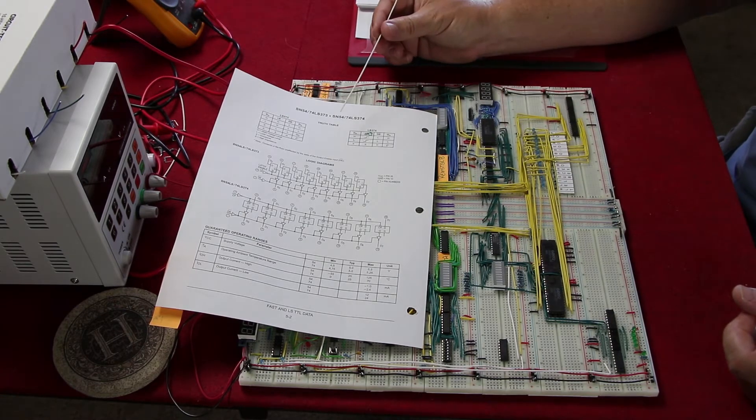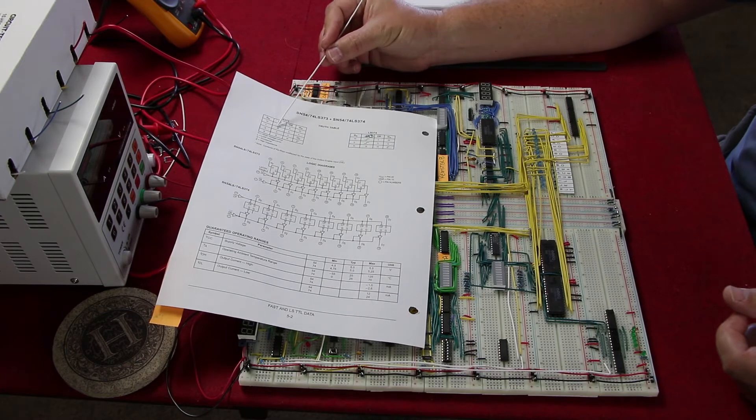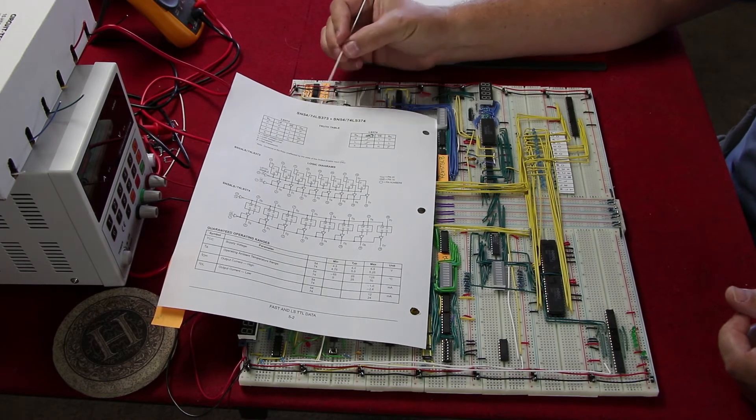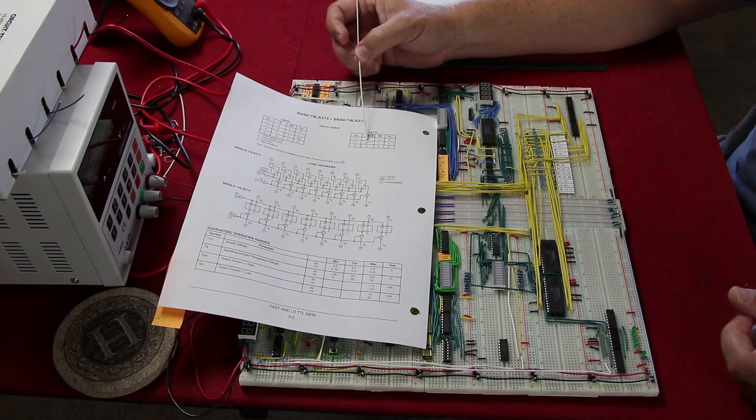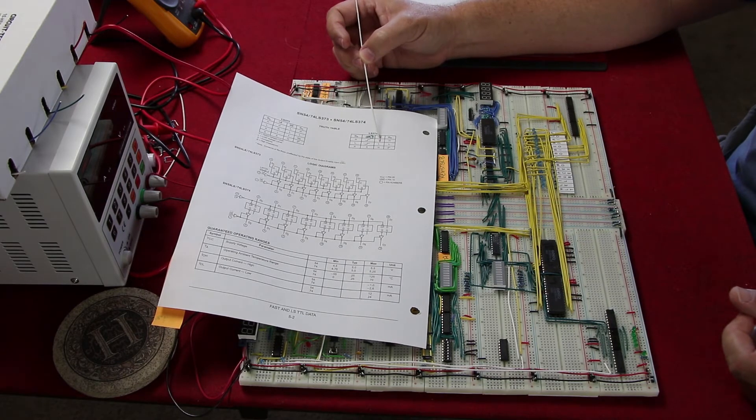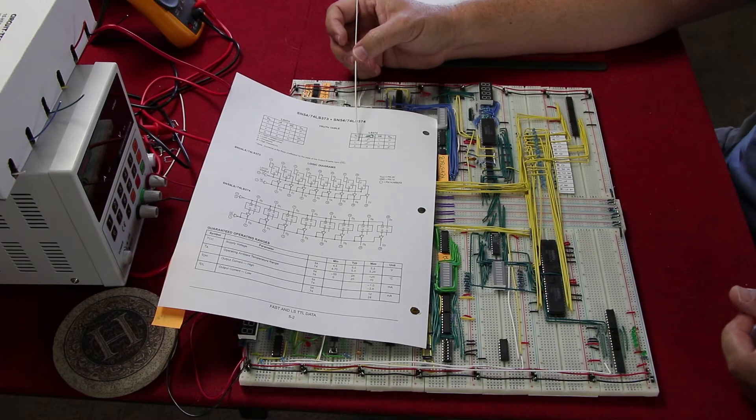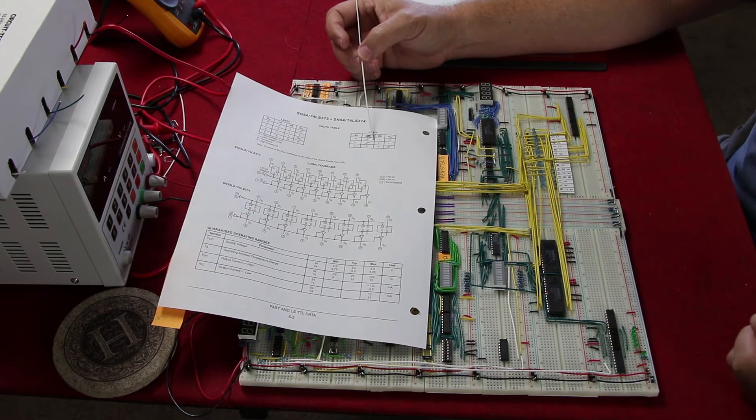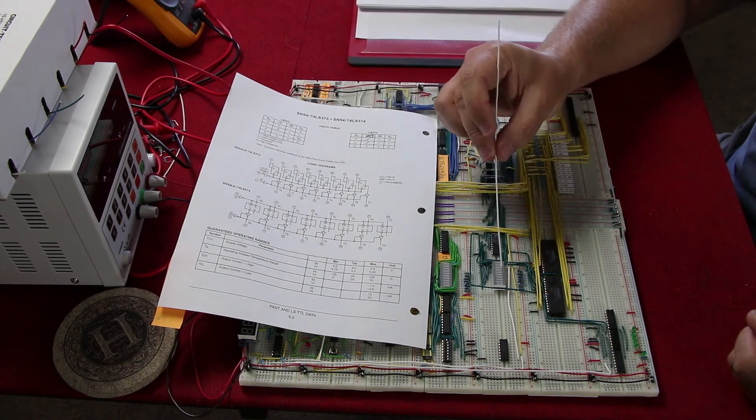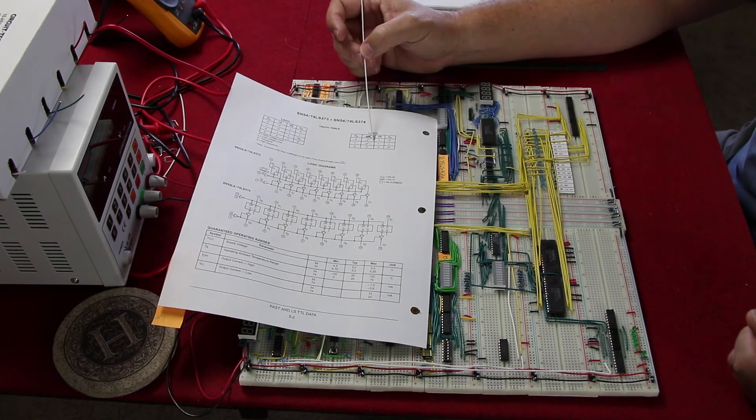The 373 allows you to control it with your microcodes, whereas the 374 depends on a rising edge pulse to actually have it happen. With this you'll probably get your data in there no problem, but the information will only flash on the bus or flash on the register here for just a moment, and that's not what we want.